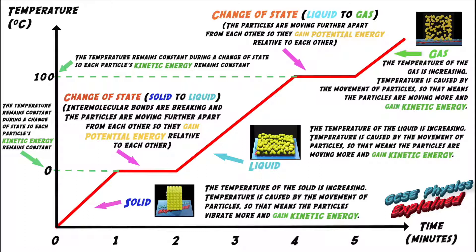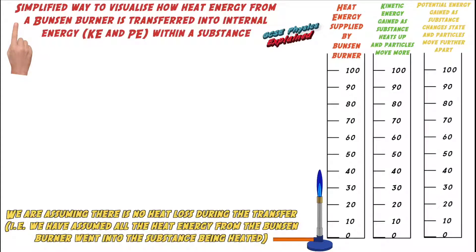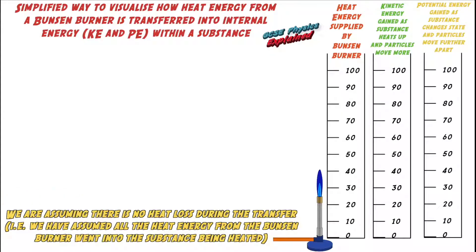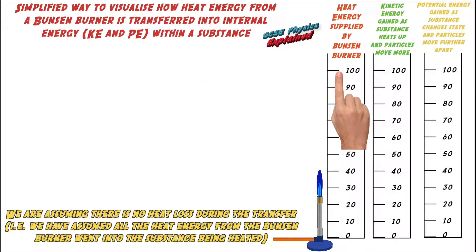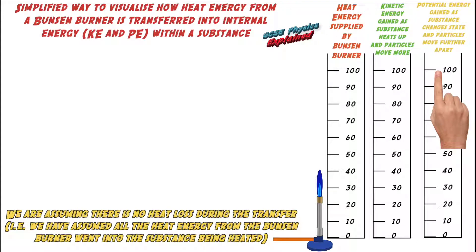That's quite a lot to take in. Let me show you a simplified way to visualize how heat energy from a Bunsen burner is transferred into internal energy within a substance, using three measuring cylinders. One represents the heat energy supplied by the Bunsen burner. One represents the kinetic energy component of internal energy. And one represents the potential energy component of internal energy.